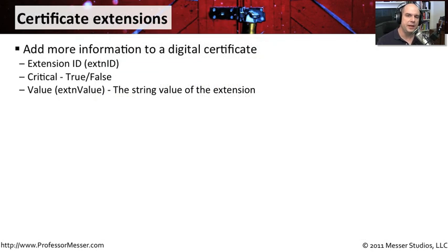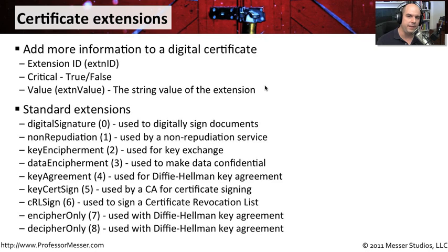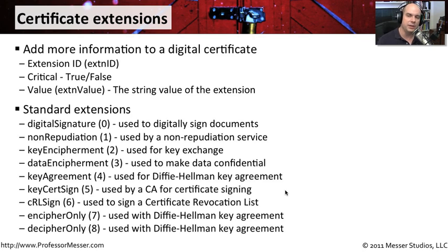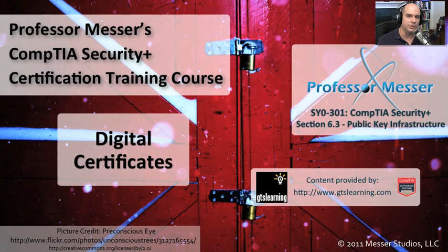The extension section at the end of an X.509 certificate allows you to include many different capabilities. Each extension has an extension ID, a critical field that is true or false, and a string value. You can use extensions to specify that a certificate is used to digitally sign documents, for key exchange, or by a certificate authority for certificate signing. This allows you to build certificates with very specific functions, and you'll find many of these options available when building certificates with your certificate authorities.